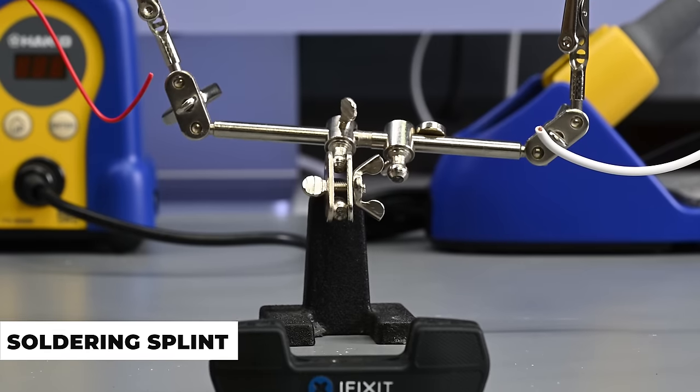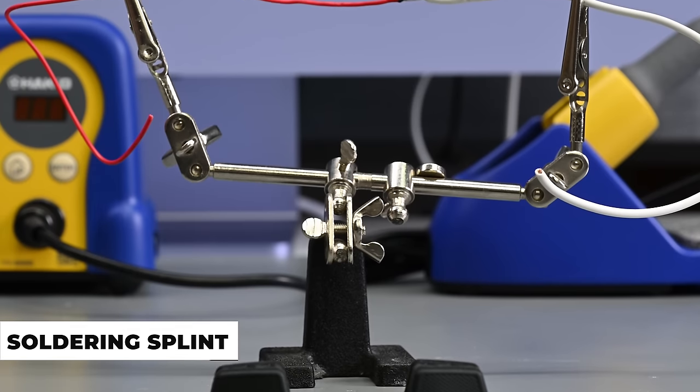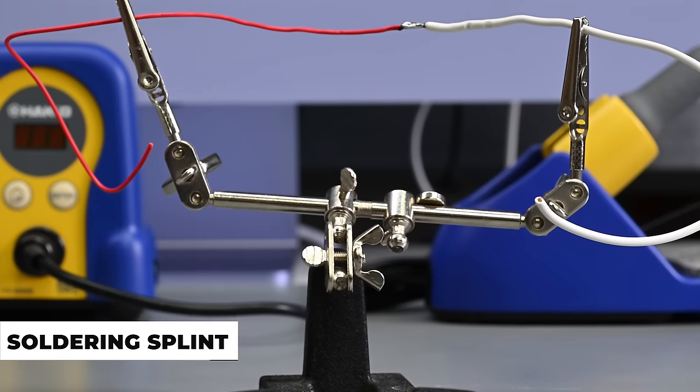And lastly a soldering splint or helping hands do the very important job of holding things nice and steady while we do our work. You can get everything we just mentioned here for less than a hundred dollars and if you get a bit creative you can get it for half that or less.